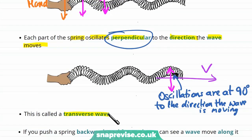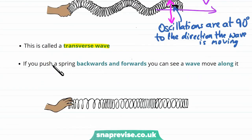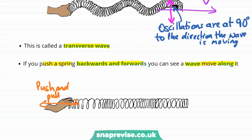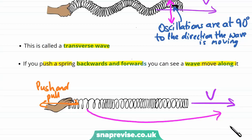Now let's see an example of a wave that isn't a transverse wave. If we instead push the spring backwards and forwards we would still see a wave move along it. So we push and pull on the spring with our hand. This will send a wave, a disturbance, moving along it. No part of the spring ever makes some grand journey from where it is to some place much further away — matter isn't moving with the wave.